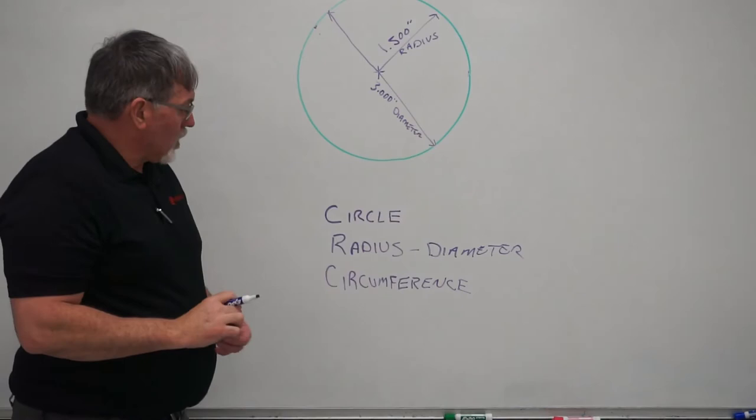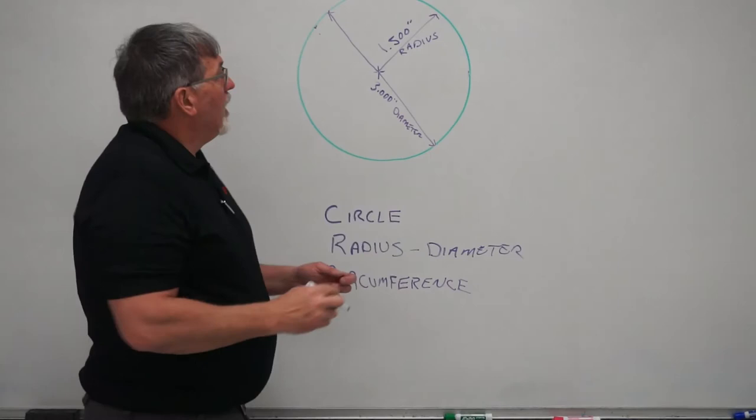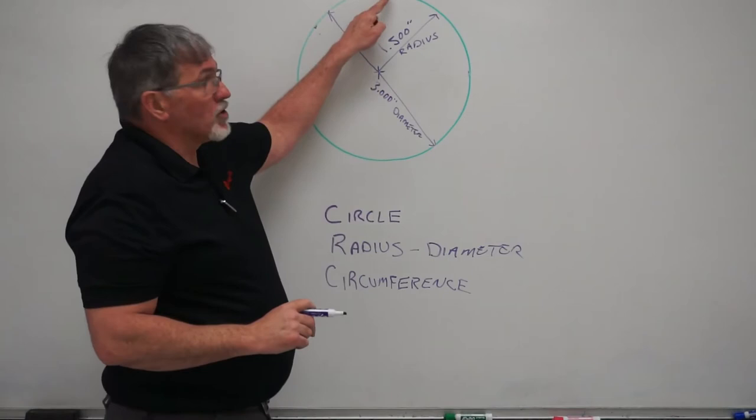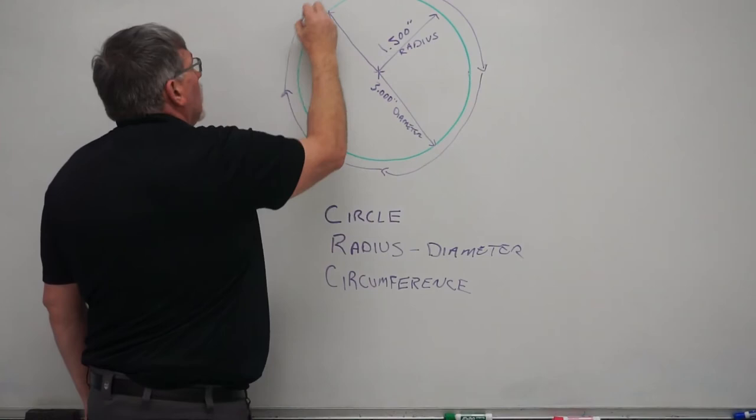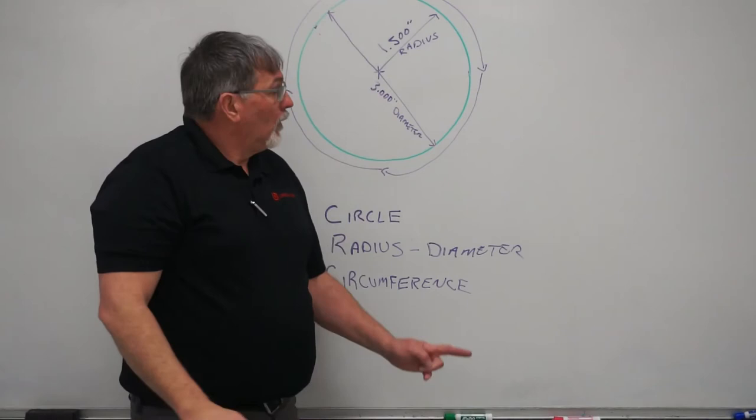Another term we want to talk about today is circumference. So circumference, by definition, is literally the length around the circle. So imagine, if you will, you just walked this line all the way around. So we start here. We travel this way. And we walk all the way around that circle. How do we find that distance?